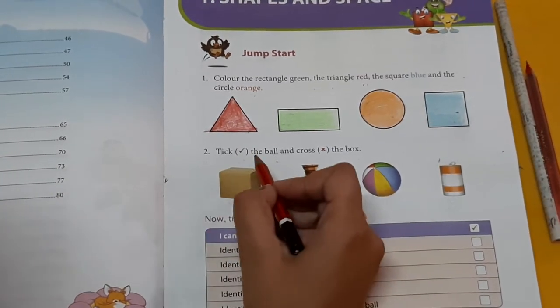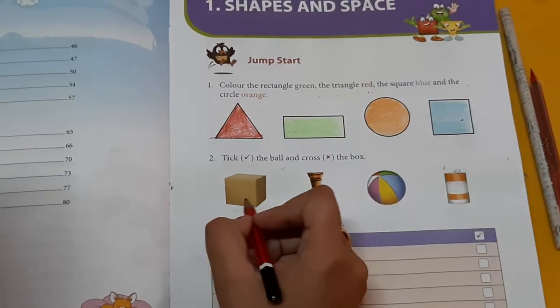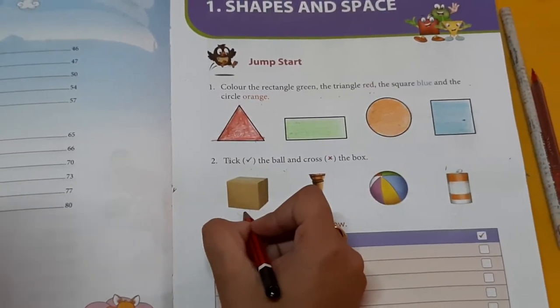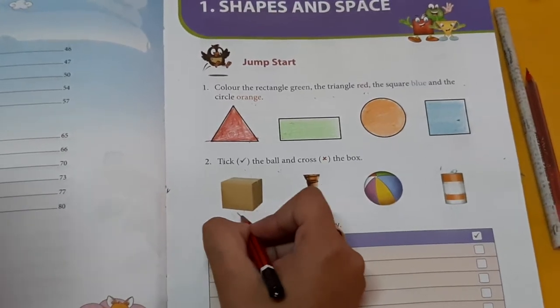Second one. Tick, write the ball and cross the box. Is it ball children? No. Is it box? Yes. Then cross.